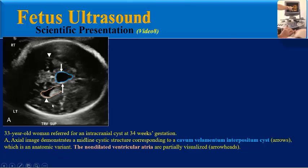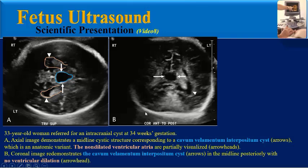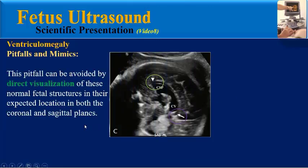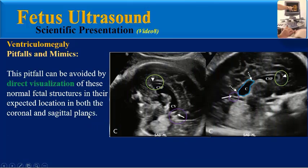The non-dilated ventricular atria are partially visualized. The coronal image demonstrates the cavum vellum interpositum cyst in the midline posteriorly with no ventricular dilation. The sagittal image reveals a normal corpus callosum from genu anteriorly to the splenium posteriorly, with the normal CSP anteriorly and the cavum vellum interpositum cyst posteriorly, outlined by thin walls. This pitfall can be avoided by direct visualization of these normal fetal structures in their expected location on both coronal and sagittal planes.